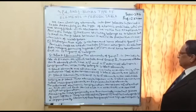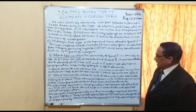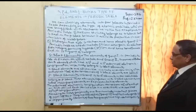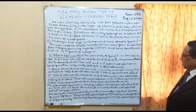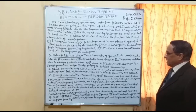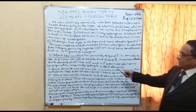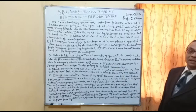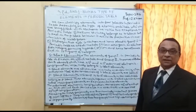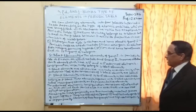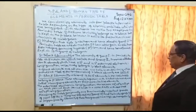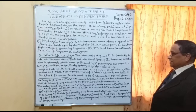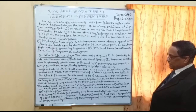S block elements: the elements of group 1 in the periodic table are known as alkaline metals, and group 2 are known as alkaline earth elements. They have NS1 and NS2 outermost electronic configurations respectively. S block elements are all reactive metals with low ionization enthalpies, and most of their compounds are ionic with positive ions.